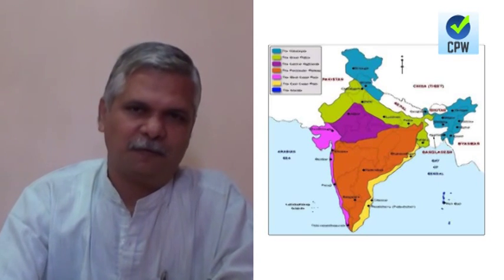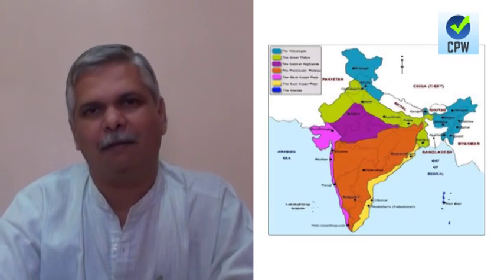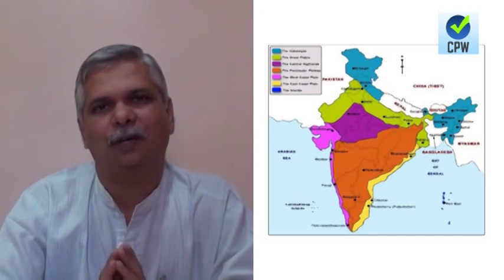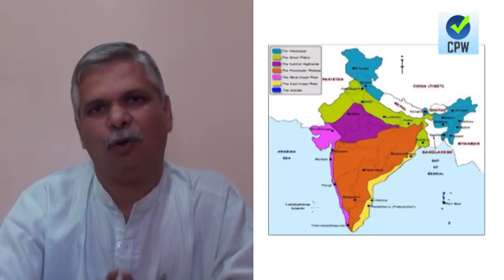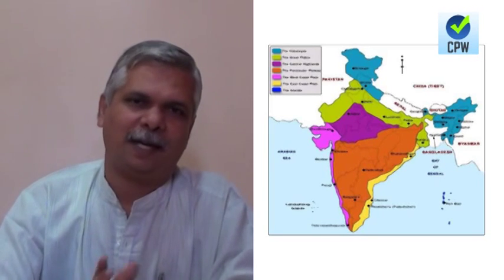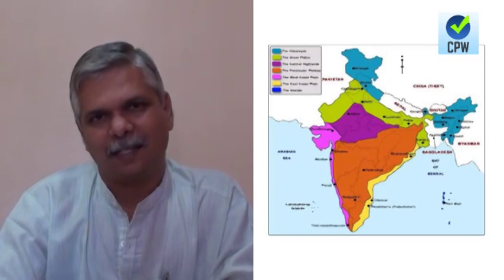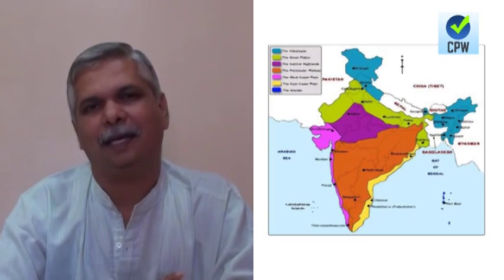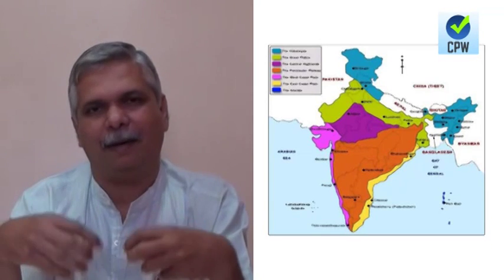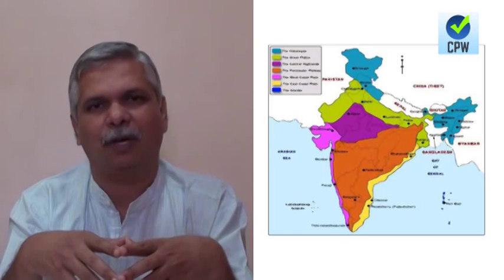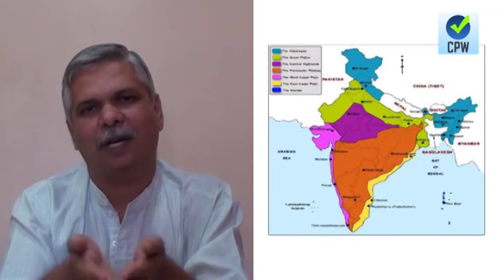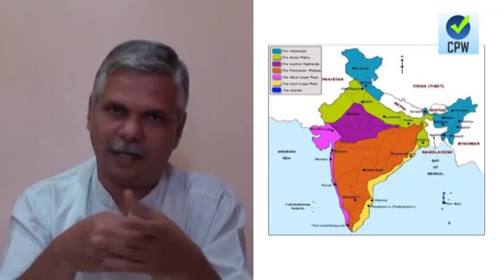Each of these five divisions has a different process of origin. The primary or original landmass of India is the Deccan plateau, as it is part of Gondwana land, the shield area which was part of the proto-continent Pangaea according to Wegener's theory. By plate tectonics, it was part of the Indian plate, which includes the Indian Ocean and both the Arabian Sea and Bay of Bengal. This Indian plate was moving and eventually collided with the Eurasian plate.